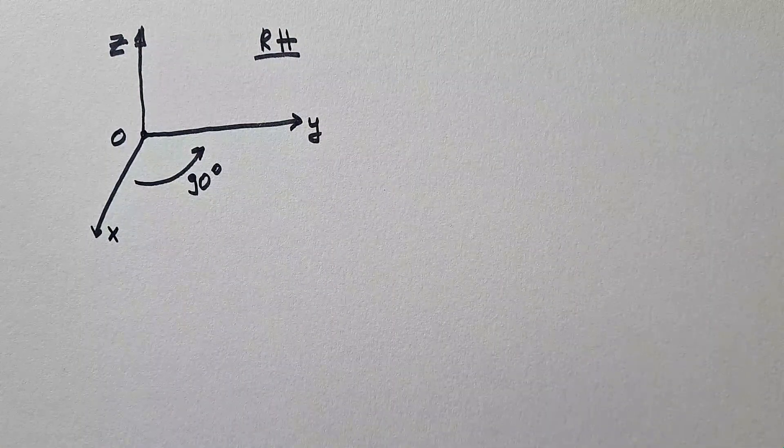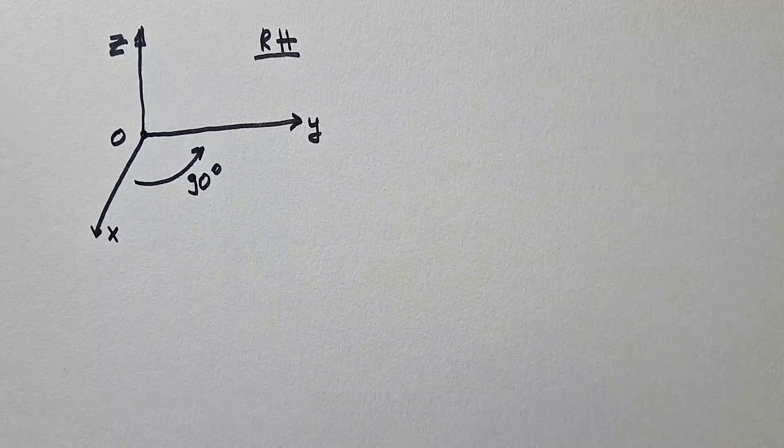If this was not clear, I understand you — this is much easier to understand if we use our right hand. Here is my right hand. To demonstrate a right-handed coordinate system, remember that the index finger is always the X axis. The middle finger, perpendicular to the index finger, is the Y axis. And then the thumb that goes up is the Z axis. And now you see this is the right-handed coordinate system.